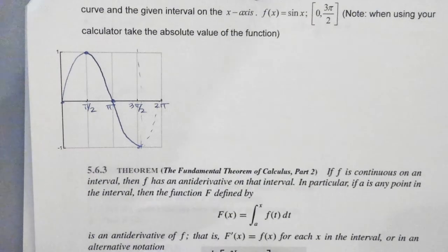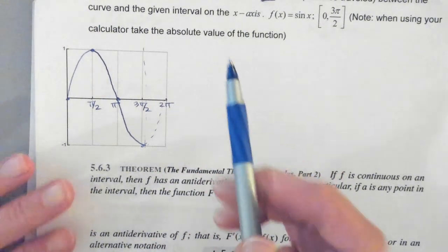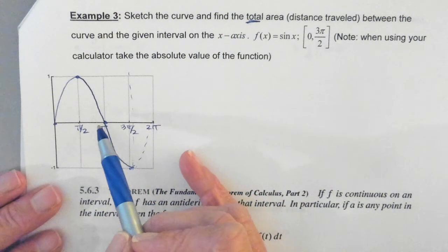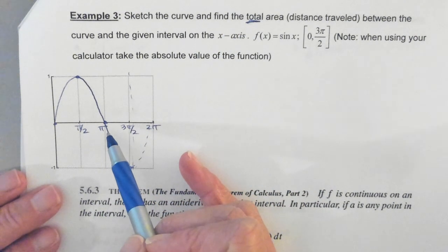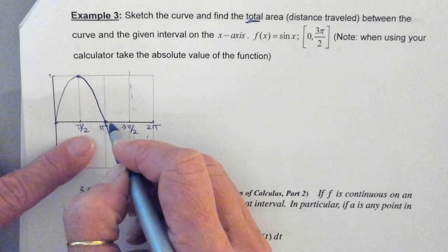Now, here's the big thing. They want us to find the total area under the curve, which is the total distance traveled, which means this portion of the area, which is really right here, where does it need to go?